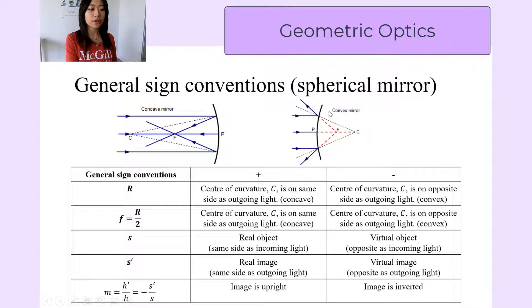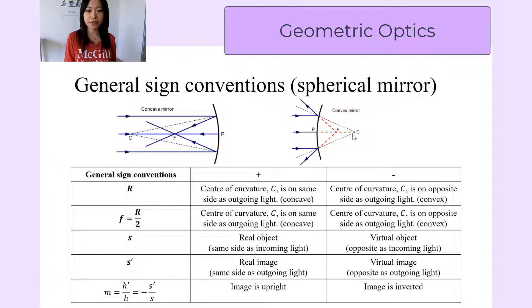On the other hand, on the right, we have a convex mirror, which means the reflected surface is on the other side of the sphere. The outgoing light is on the left of the mirror, but the center of the sphere is on the right, which is on the opposite side. So for a convex mirror, the radius of curvature is negative. The other sign conventions — the object distance, image distance, and the lateral magnification — are the same as for the lens.